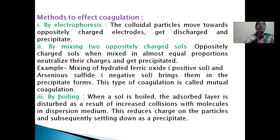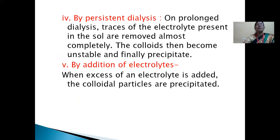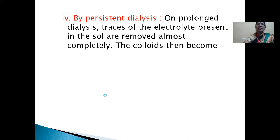Third method is by boiling: when a sol is boiled, the adsorbed layer is disturbed due to increased collisions with molecules in the dispersion medium, reducing the charge on the particles, and they subsequently settle down as a precipitate. Fourth, by persistent dialysis: on prolonged dialysis, traces of electrolyte present in the sol are removed almost completely and the colloids become unstable and finally precipitate. Fifth, by addition of electrolyte: when an excess of electrolyte is added, the colloidal particles are precipitated.